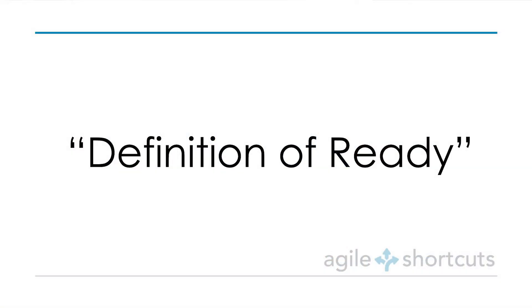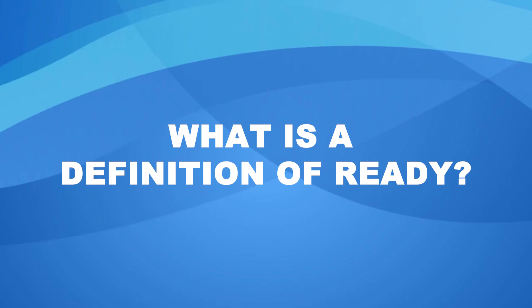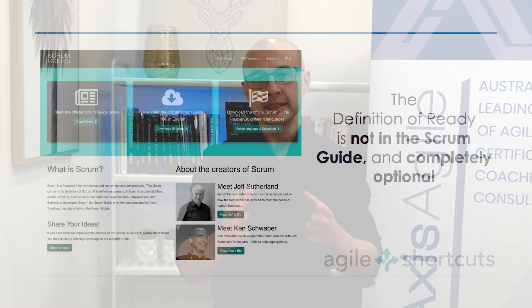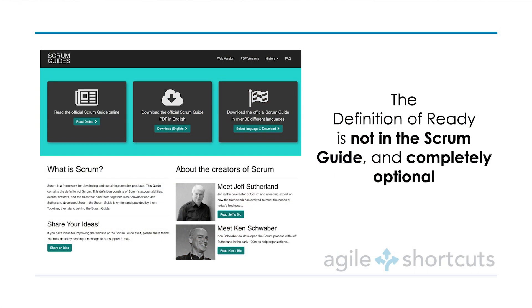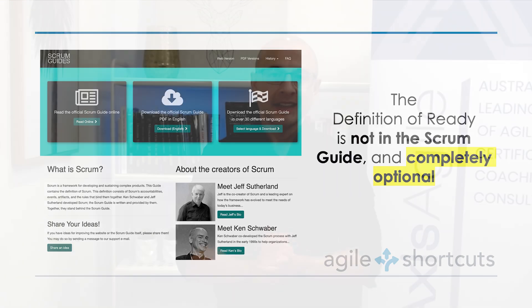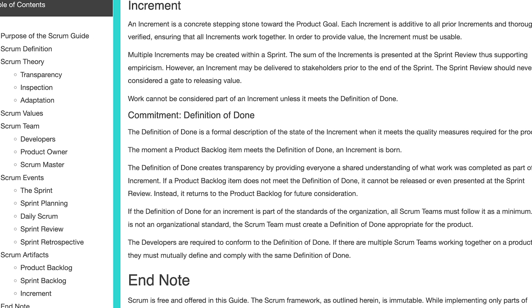In this video, let's take it a step further and look at how we can improve our product backlog refinement process through using what is called a Definition of Ready. The first thing you should know is that it is not part of core Scrum — there is no mention of a Definition of Ready in the Scrum Guide and it is completely optional.